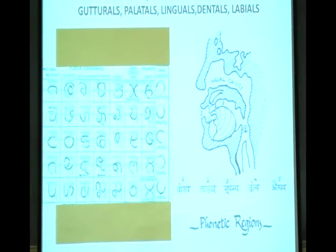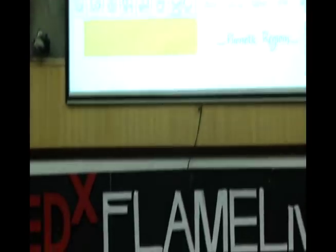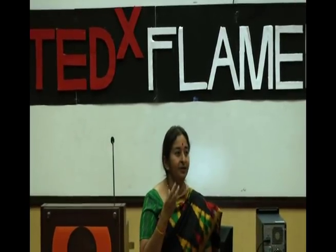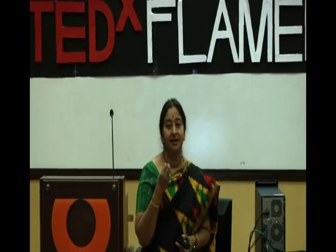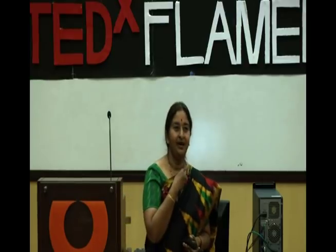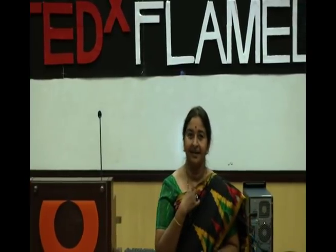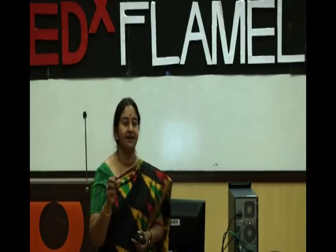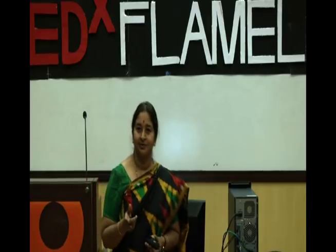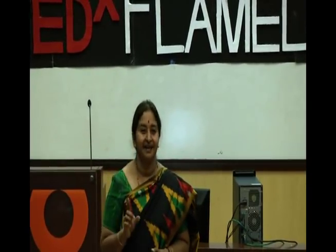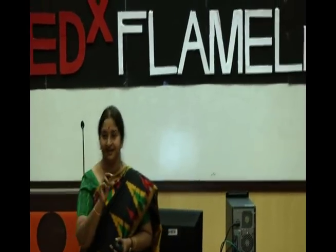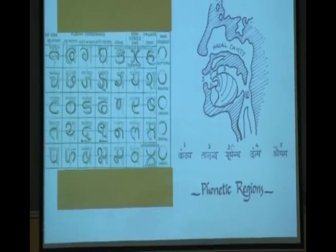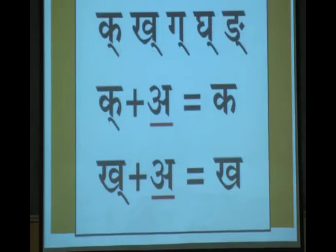The grammarians also made things very simple for students to understand how to pronounce the letter forms of the Indian language. They identified five different points in our mouth from which you can chant. At the base of the vocal cords you produce the guttural sounds — the letter forms in the first line are called gutturals. The last line are labials, where your lips meet. You have a very clear understanding: labials, gutturals, dentals, and so on — five distinct categories for all consonants to enable students to understand and utter them correctly.